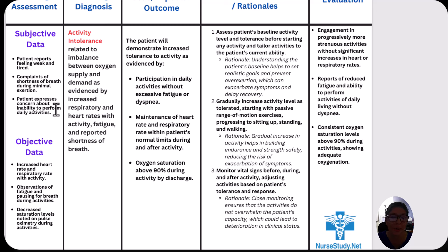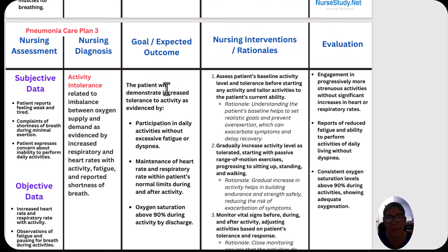Our goal and expected outcome for this nursing diagnosis will be: the patient will demonstrate increased activity tolerance as evidenced by participation in daily activities without excessive fatigue or shortness of breath, maintenance of heart rate and respiratory rate within the patient's normal limits during and after activity, and oxygen saturations above 90% during activity and by discharge.